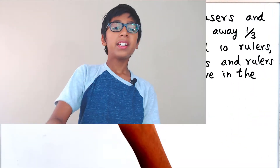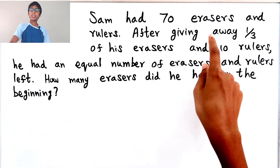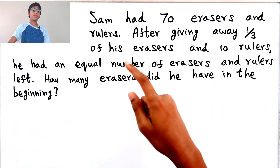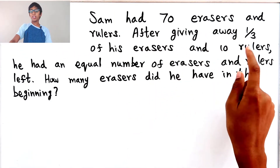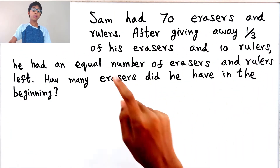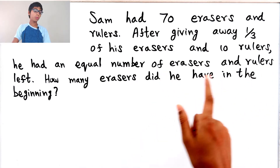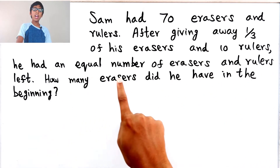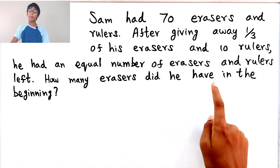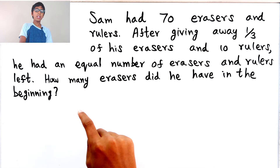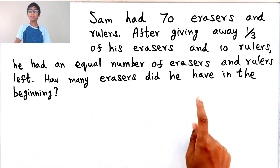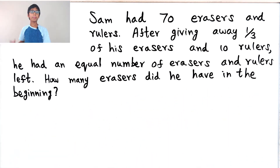Hi guys! In this video, let's do an algebra problem. So the problem is: Sam had 70 erasers and rulers. After giving away one-third of his erasers and 10 rulers, he had an equal number of erasers and rulers left. How many erasers did he have in the beginning? Let's find out!